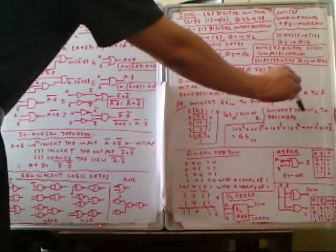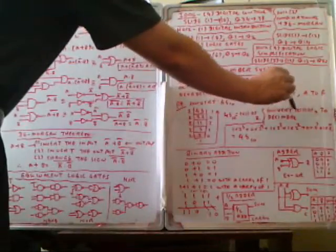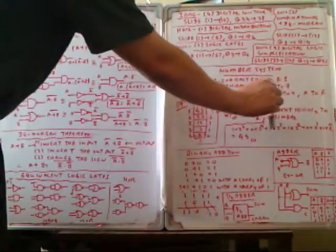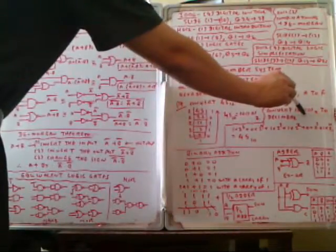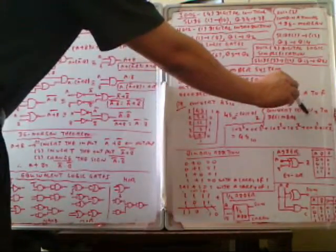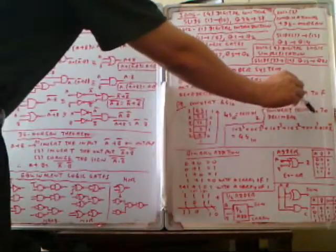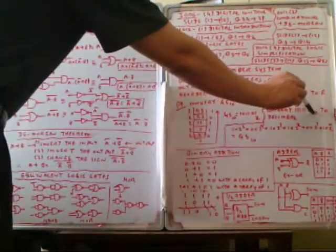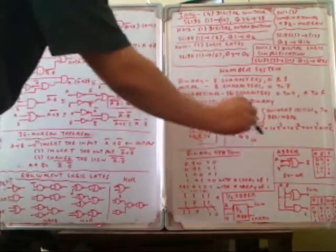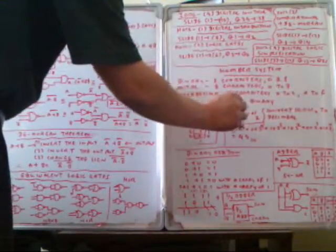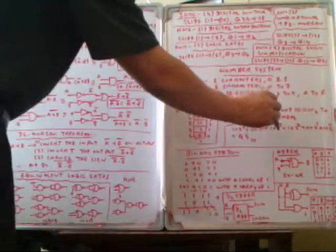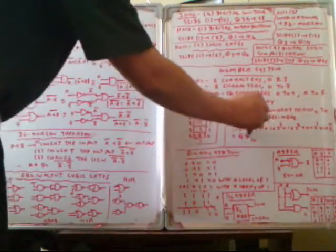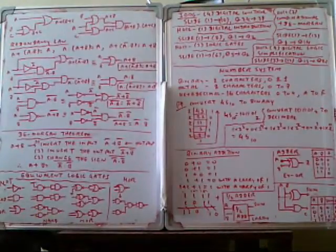Continuing: 1 times 2 to the power 5 is 32, plus 0 times 2 to the power 4, plus 1 times 2 to the power 3 is 8, plus 1 times 2 squared is 4, plus 0 times 2 to the power 1, plus 1 times 2 to the power 0 is 1. So 32 plus 8 plus 4 plus 1 equals 45. This confirms the conversion.